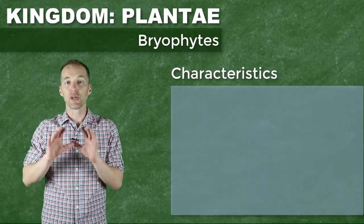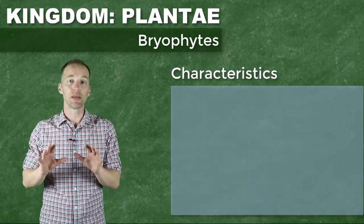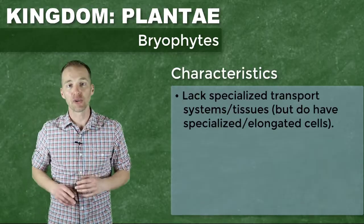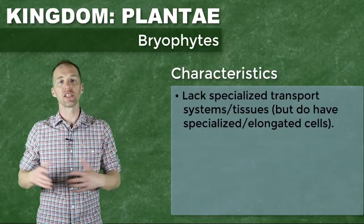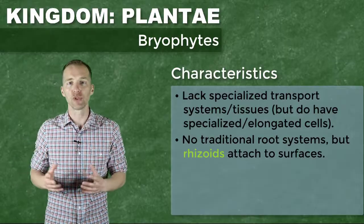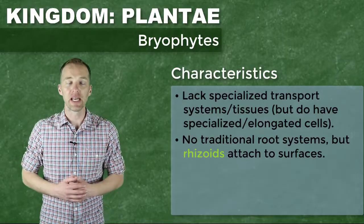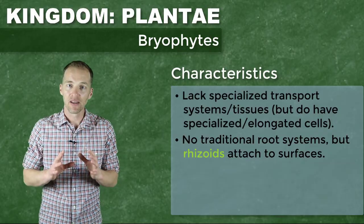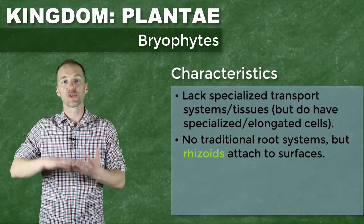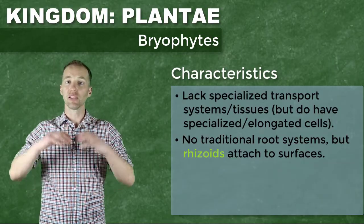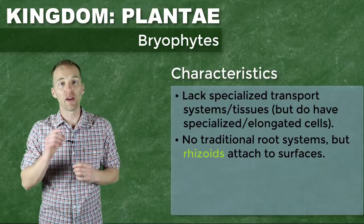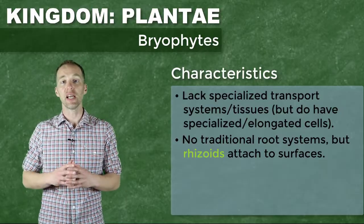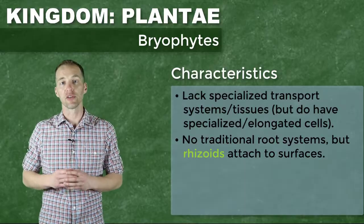These bryophytes are extremely simple. They lack transport systems — they have specialized cells, but no transport systems. They don't have root systems, stems, or proper leaves like we see in other plants. But they are terrestrial photosynthesizing producers, and they are one of the first types of organisms you will see when the process of succession occurs.